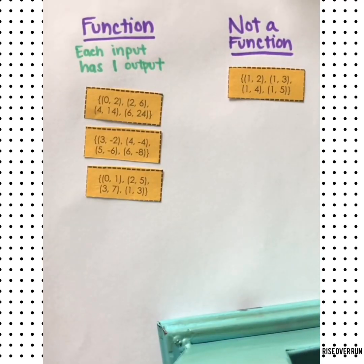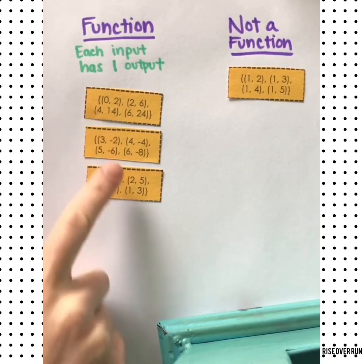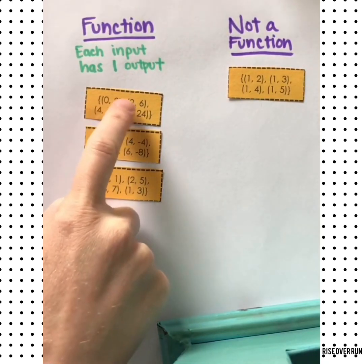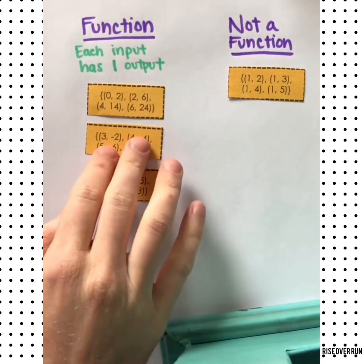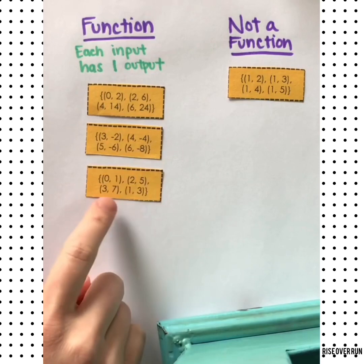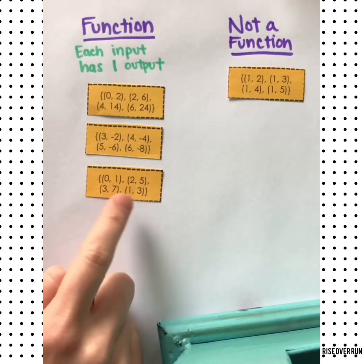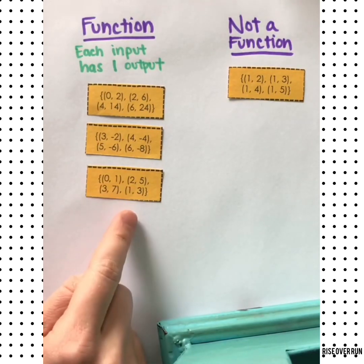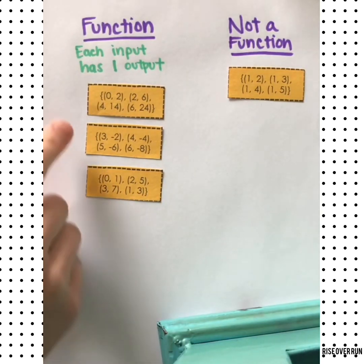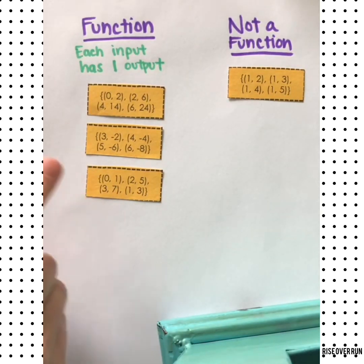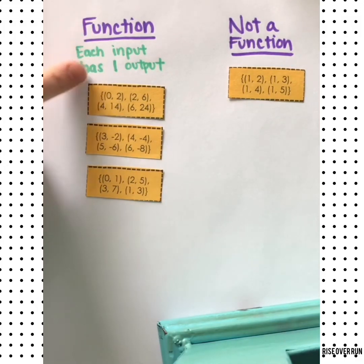Let's look at some examples when we're just given a list of ordered pairs. All of these are functions. We can see that the x's are not repeating, so that's a function. Again here, the x's are not repeating, and the x's are not repeating. It doesn't matter if they're in order. It doesn't matter if you know what the function is. You don't have to figure out the equation. You just need to make sure that each input has one output.